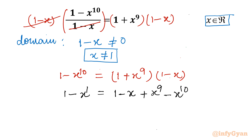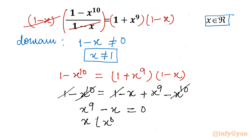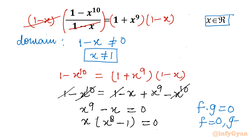The LHS is 1 - x^10. Now we cancel 1 and 1 on both sides, and cancel -x^10 on both sides. What is left is x^9 - x = 0. We take x as a common factor, giving x(x^8 - 1) = 0. Since f·g = 0 means f = 0 or g = 0.